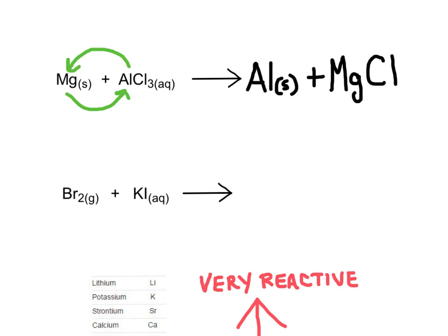To balance the charges, I'll need two chlorines, giving MgCl₂. This product will be dissolved in water, so I'll mark it as aqueous. So in this first reaction, two metals switched places with each other, and the non-metal chlorine just went along with the magnesium.